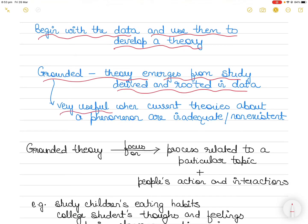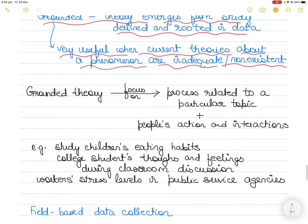Grounded theory studies are especially useful when current theories about a phenomenon are either inadequate or non-existent. If it cannot explain the phenomenon, typically a grounded theory will focus on a process that is related to a particular topic.